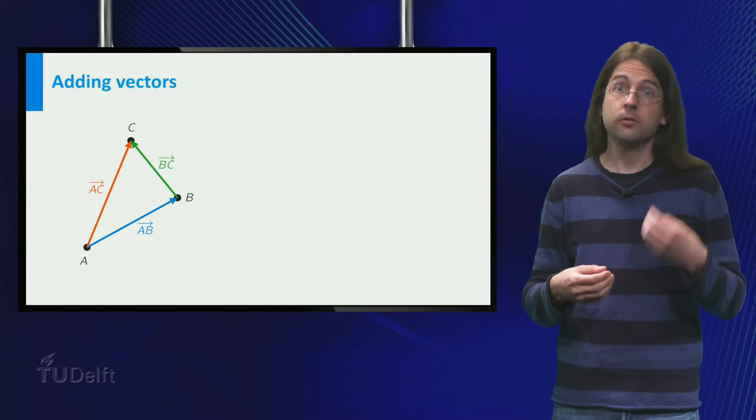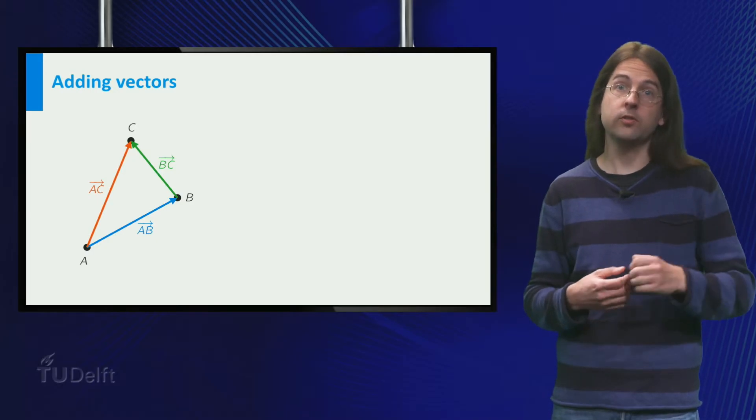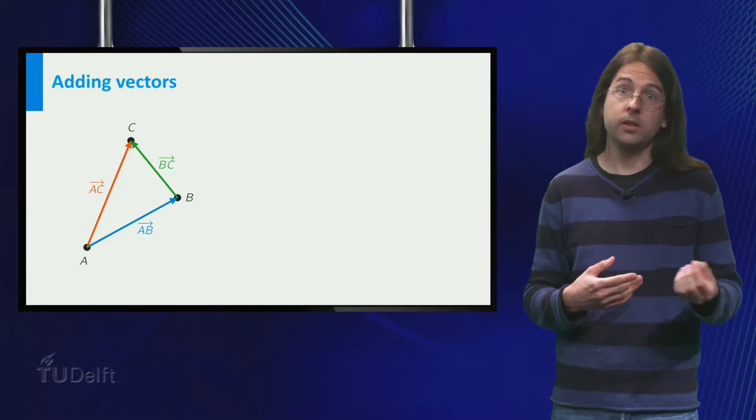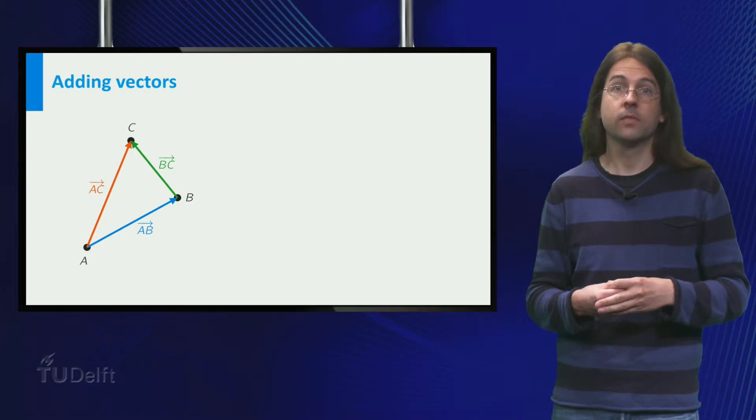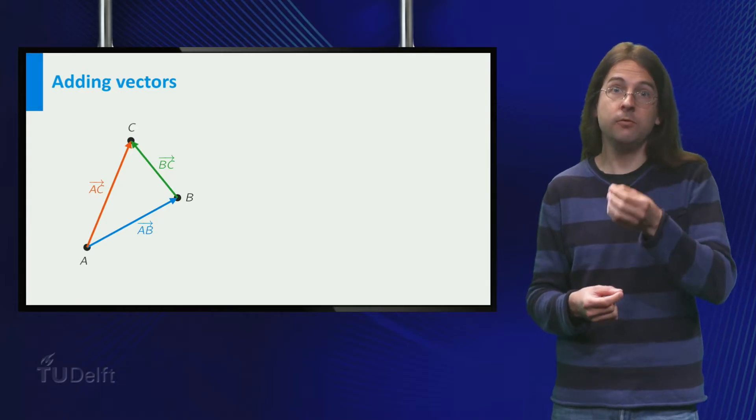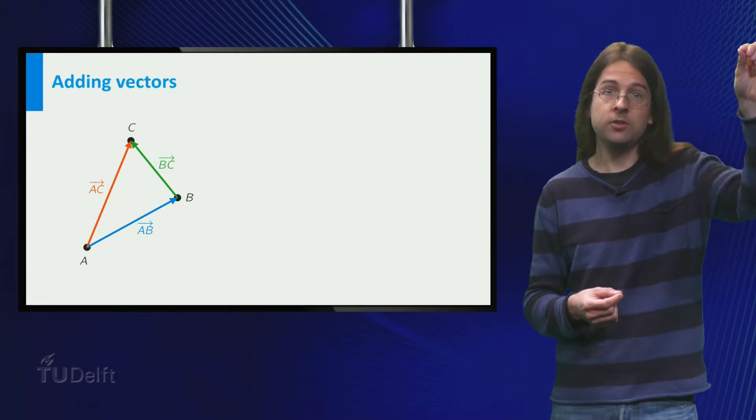Now, consider three points in the plane, a, b and c. Two points define a vector, the vector from one point to the other. The vector from a to b is called simply ab. What happens if you first move from a to b and then from b to c? That's right, effectively you have moved from a to c.